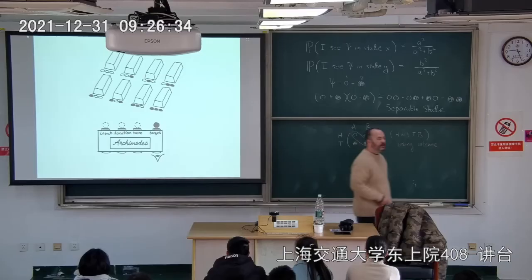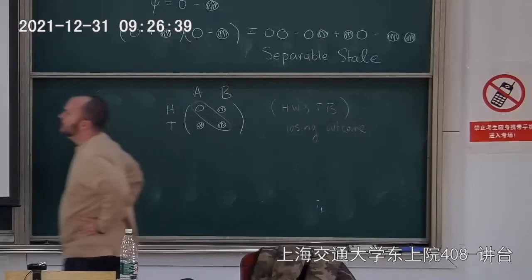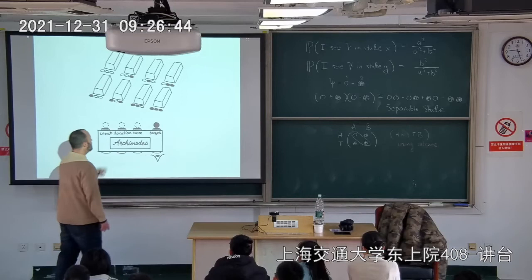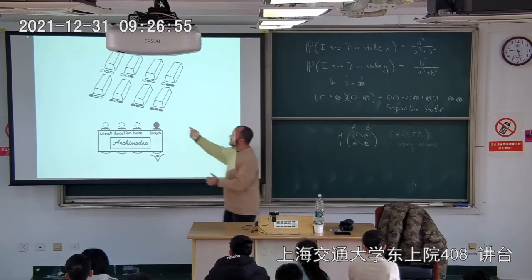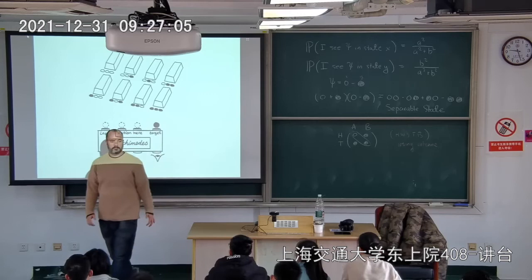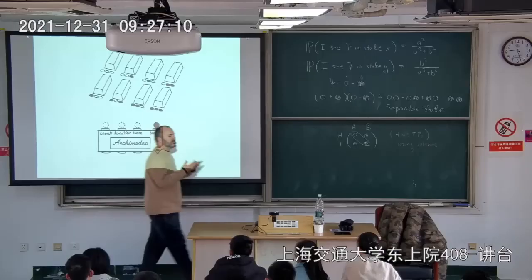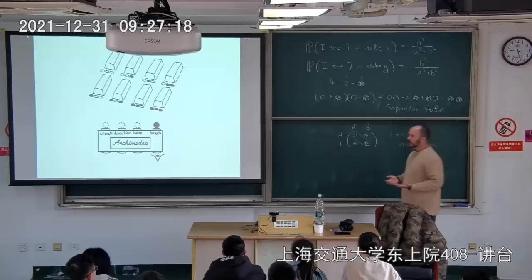Bob has been sitting there doing nothing, but Alice's operations on her two particles have altered the state of Bob's particle — even though they're on opposite sides of the universe. No matter what Alice reports, Bob knows exactly what he can do to his state to switch it into psi. We can think of state psi as being transported to Bob with zero error whatsoever — this is quantum teleportation.